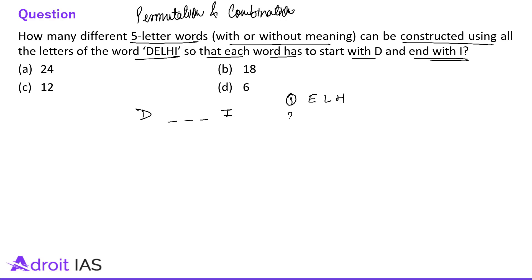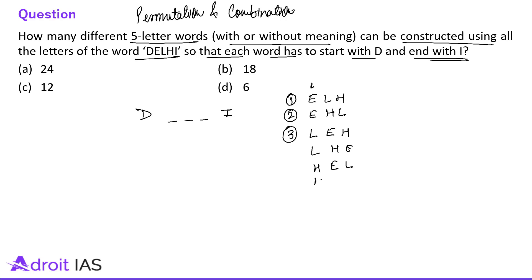The remaining letters to arrange in the middle are E, L, H. We try all combinations: starting with E then L then H, then E then H then L; starting with L: EH, HE; starting with H: EL, LE. So total six words are there.